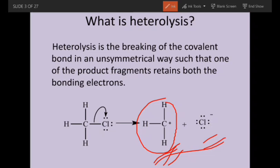So, heterolysis is the breaking of the covalent bond in an unsymmetrical way such that one of the product fragments retains both the bonding electrons. Here, Cl⁻ retains both the bonding electrons. This is called heterolysis.